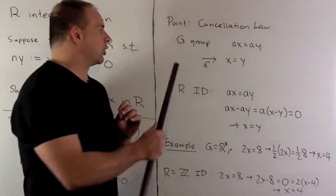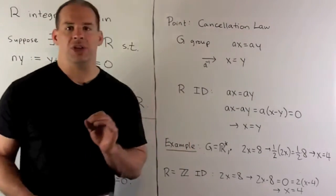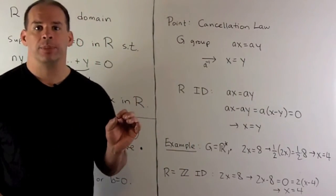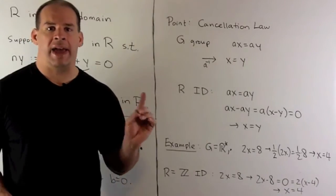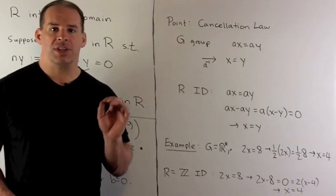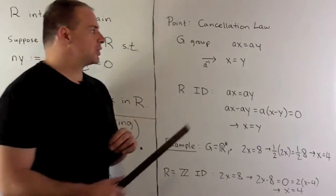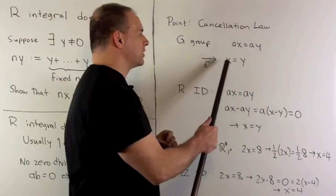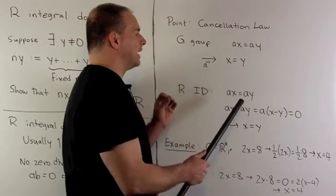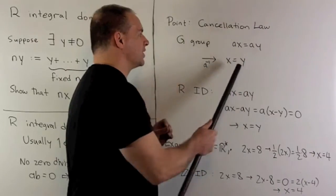If I had a group with the equation ax equals ay, we would multiply both sides by a inverse. A inverse times a is the identity. So this equation would reduce to x equals y. So the idea is I could just cancel those a's off.